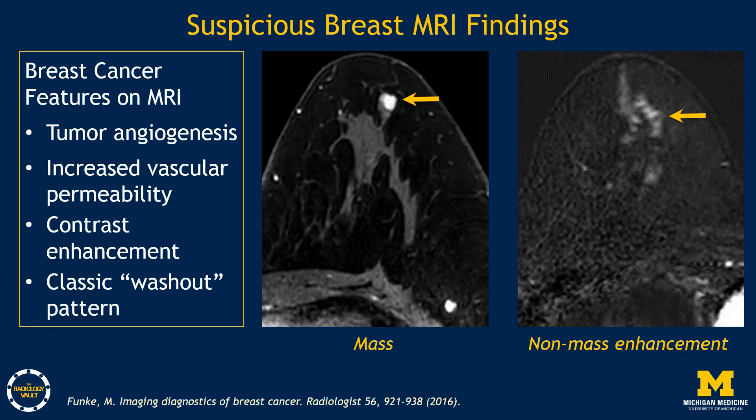Breast cancers develop tumor angiogenesis and increased vascular permeability. As a result, they demonstrate contrast enhancement on MRI. Classically, a breast cancer may demonstrate a washout pattern of enhancement, where it rapidly takes up the injected intravenous contrast and then quickly returns it into the circulation. Suspicious breast MRI findings are often classified as masses or non-mass enhancement, as shown on the images on the screen.